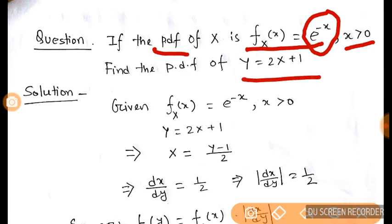So now, first we write the given PDF: e^(-x), and the range x greater than 0.